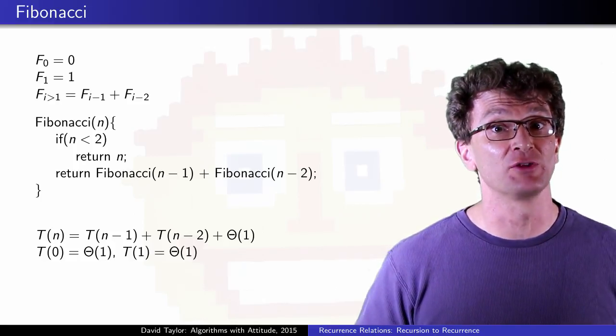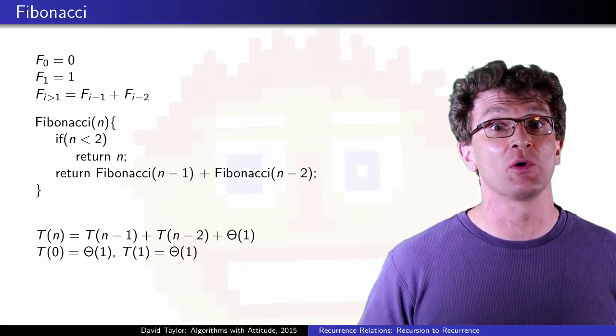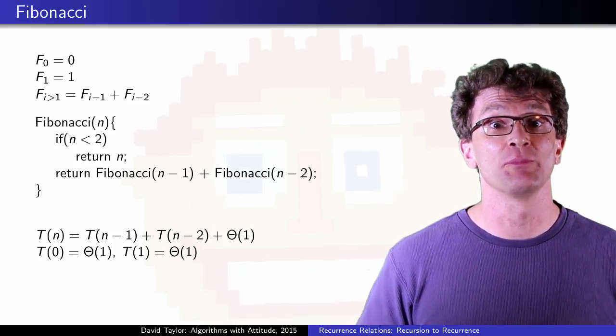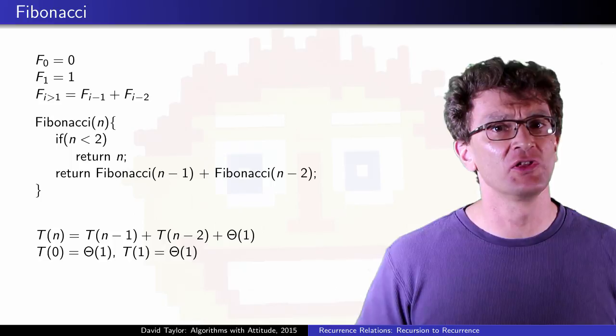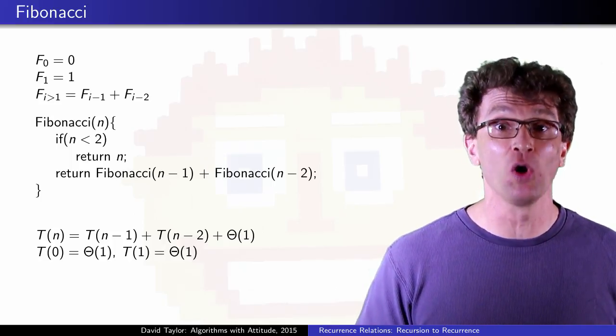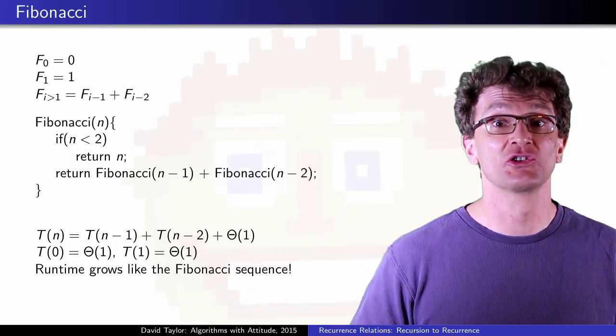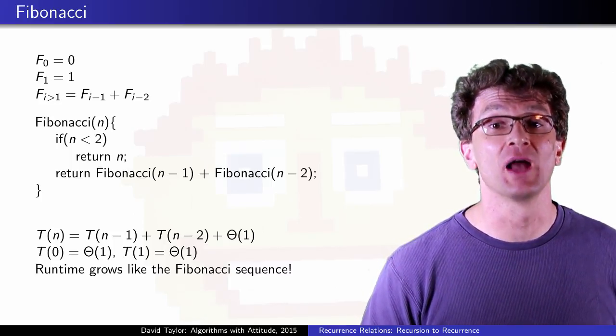To be complete, we also give a base case, but generally the base case is just going to be that the program takes some constant amount of time to run for some fixed sized inputs. For this program, the run time actually grows like the Fibonacci sequence itself, because the recurrence relation looks so similar to the Fibonacci definition.